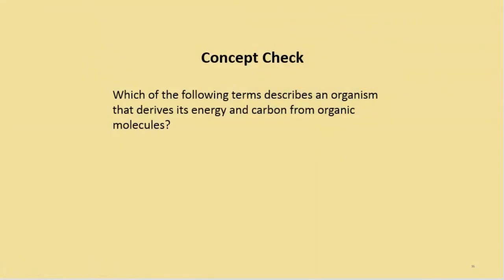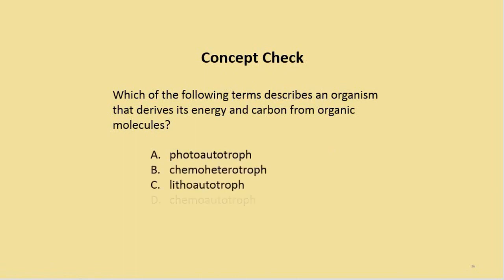Quiz question: Which term describes an organism that derives its energy and carbon from organic molecules? The options are photoautotroph, chemoheterotroph, lithoautotroph, chemoautotroph, or photoheterotroph. The answer is chemoheterotroph.